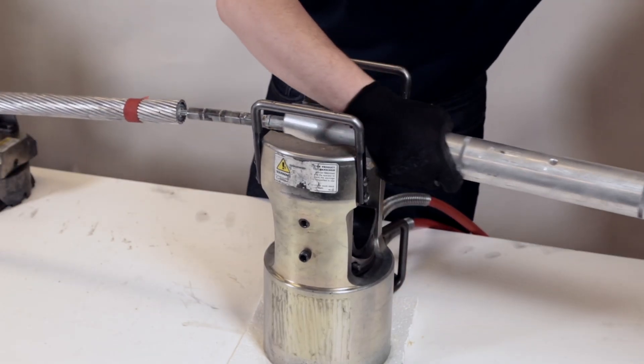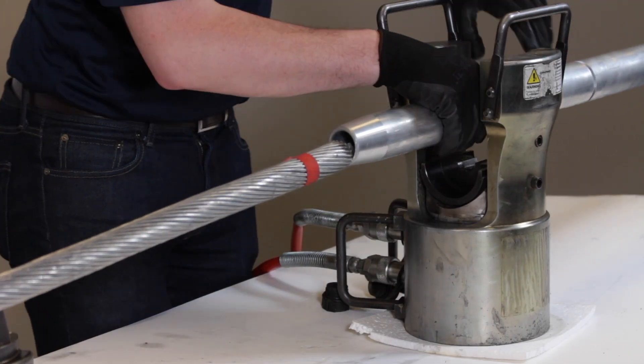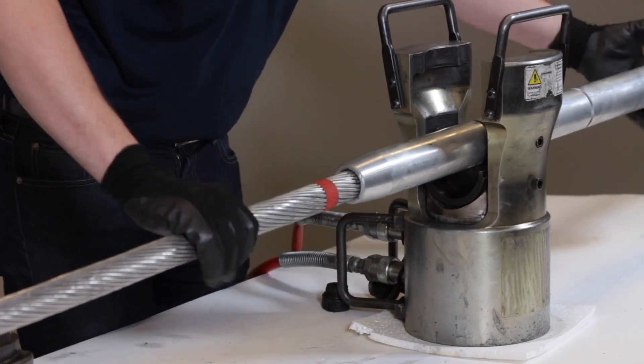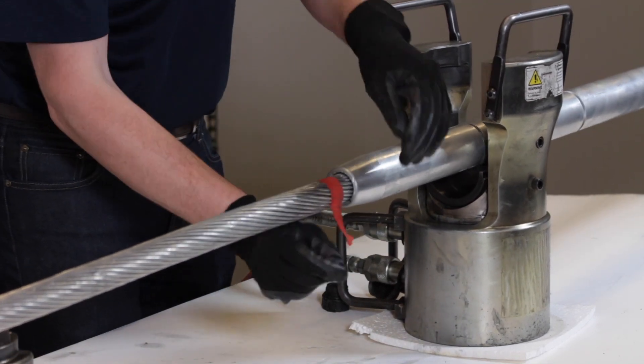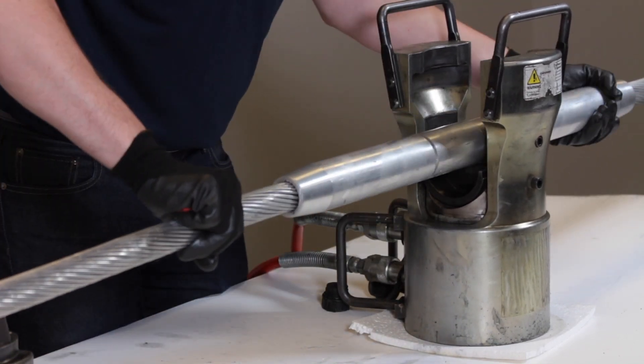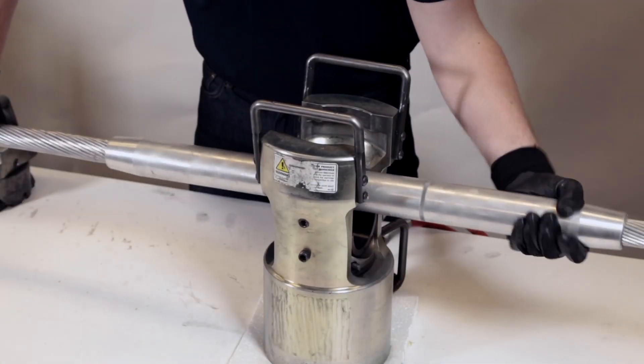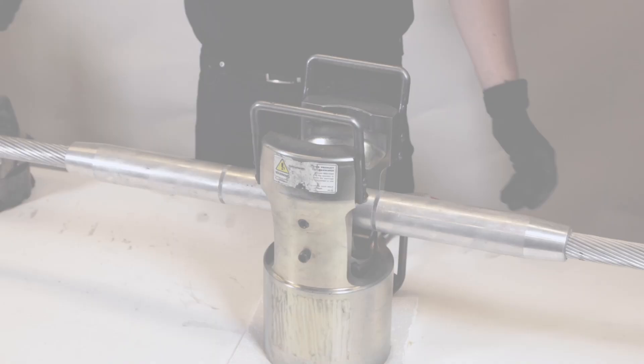Slide the aluminum splice body towards the other conductor until the aluminum strands enter the end. Remove the tape and continue sliding the splice on until the end lines up with the mark made earlier on the conductor strands.